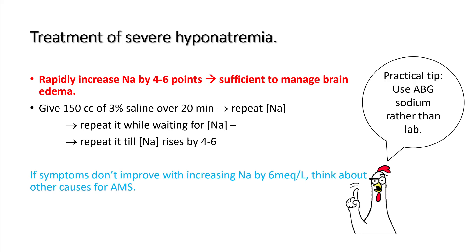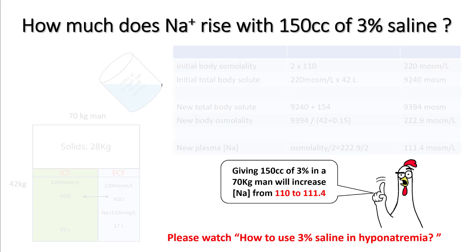If symptoms don't improve with increasing sodium, think about other causes of altered mental status. Many are worried about using 3% saline because of concerns about rapid correction. Understand that even in a 70 kg man, 150 cc of 3% saline will increase sodium by only about 1 mEq. If you want to understand 3% saline better, please check out my lecture on how to use 3% saline in hyponatremia.